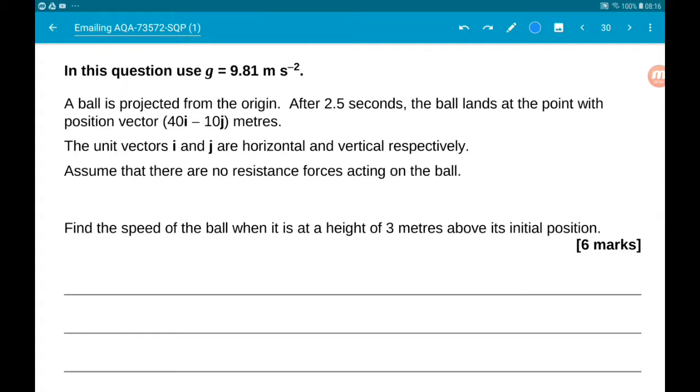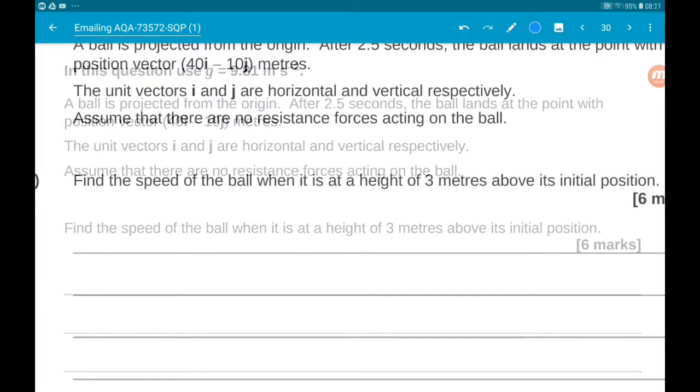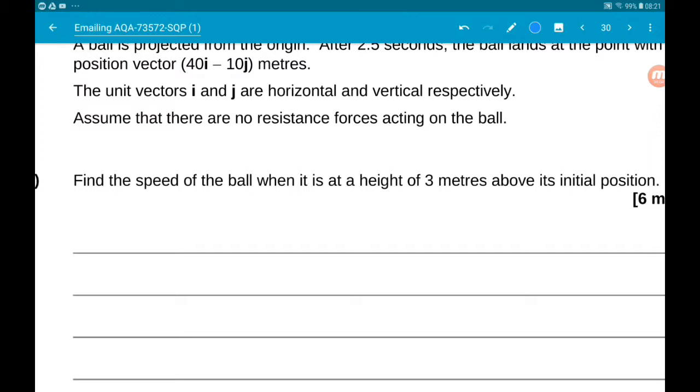Okay, question 17, the final question. In this question, g is 9.81 meters per second squared, so our accuracy then is to three significant figures. A ball is projected from the origin. After 2.5 seconds, the ball lands at the point with position vector 40i minus 10j meters. The unit vectors i and j are horizontal and vertical respectively. Assume that there are no resistance forces acting on the ball.